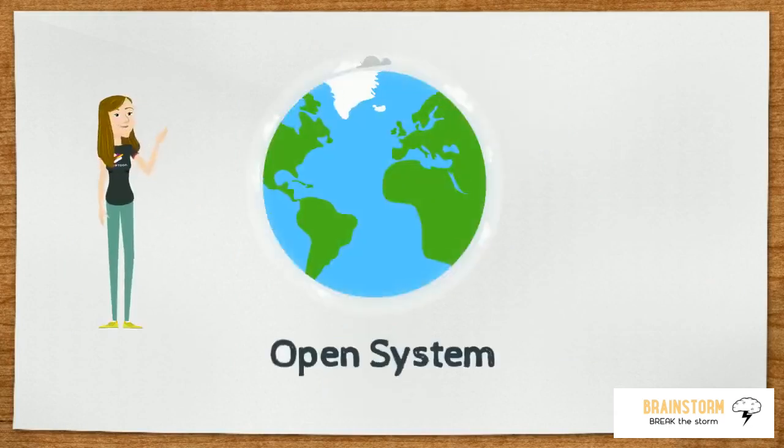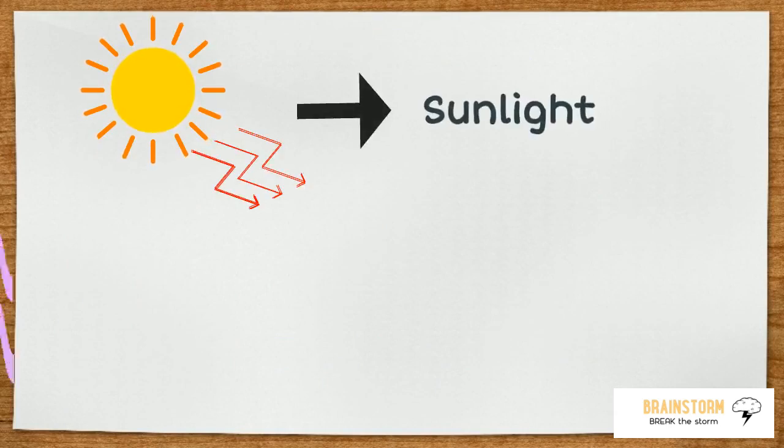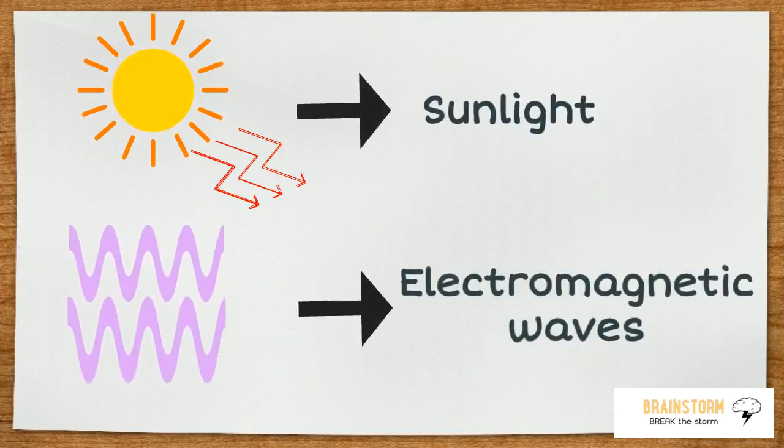Earth is an open system, where energy will flow in like sunlight and out like infrared electromagnetic radiation.